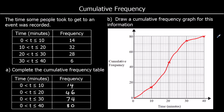If we were asked for the median: this time we've got 80 people, so the median would be halfway — 40 people. Go along to the line and down, and you read off 19 minutes. So we can say the median time was 19 minutes. For the upper quartile, three quarters of 80 is 60 — go along from 60 to the line and down — and read off something around 24. And for the lower quartile, a quarter of 80 is 20, so go from 20 along to the line and down.